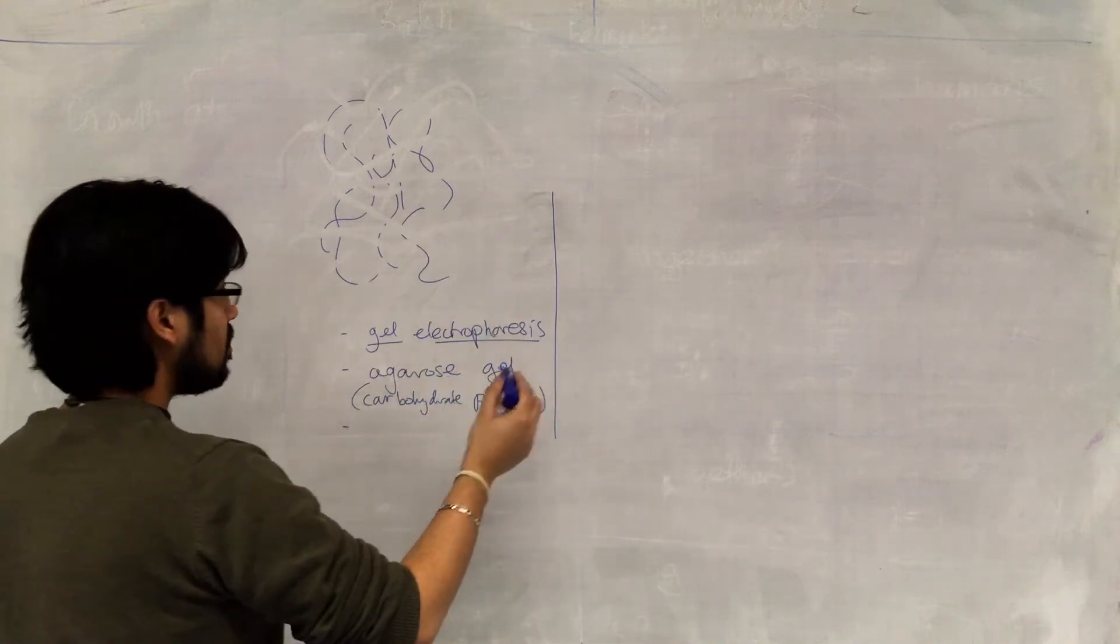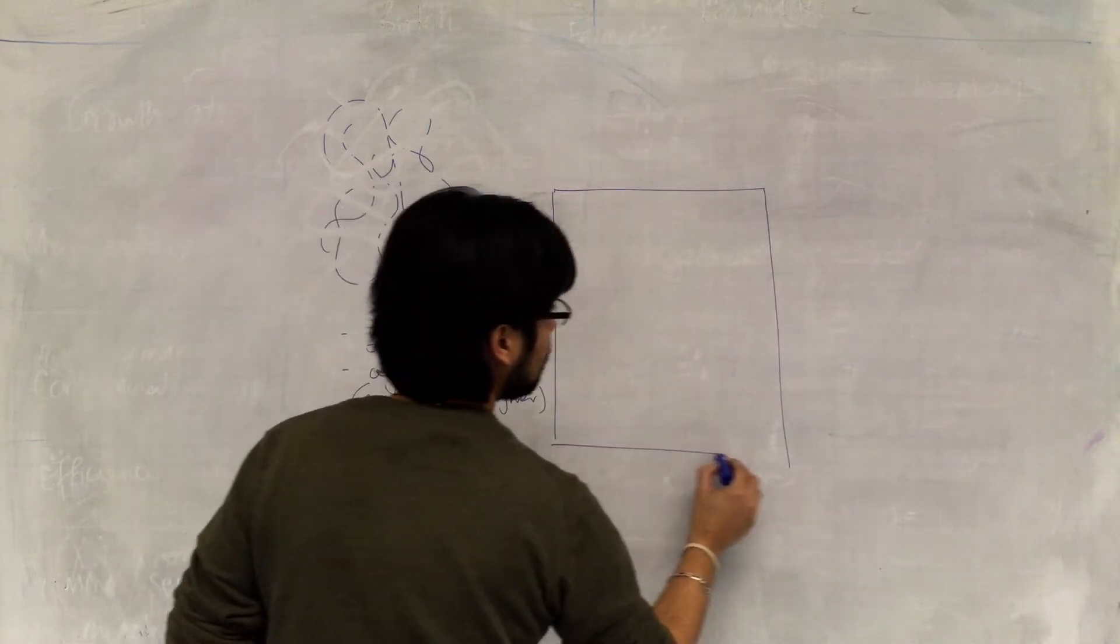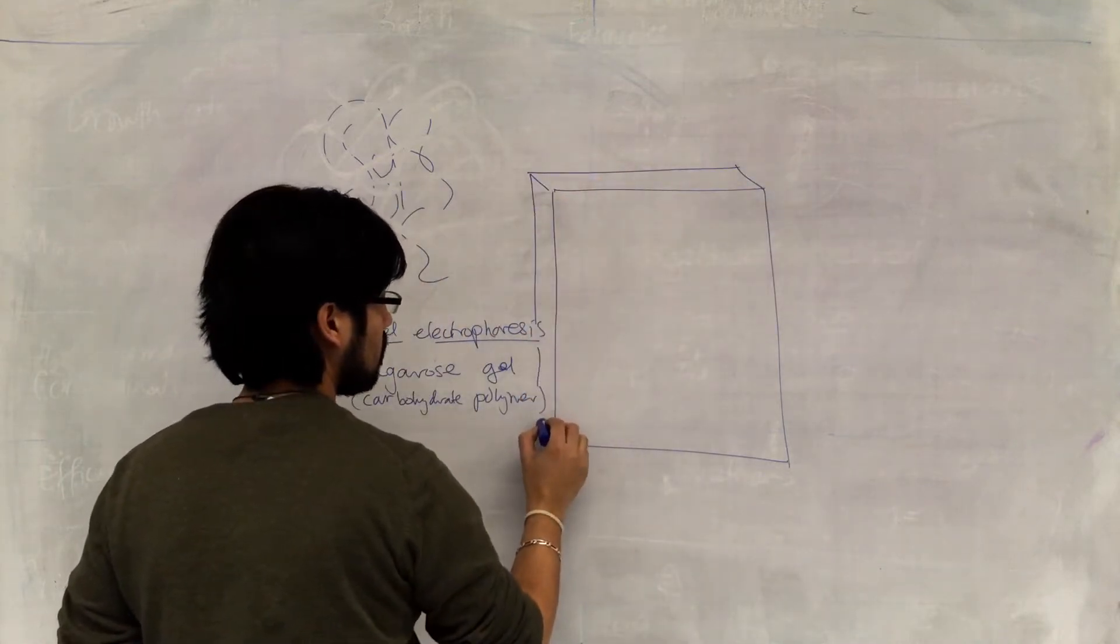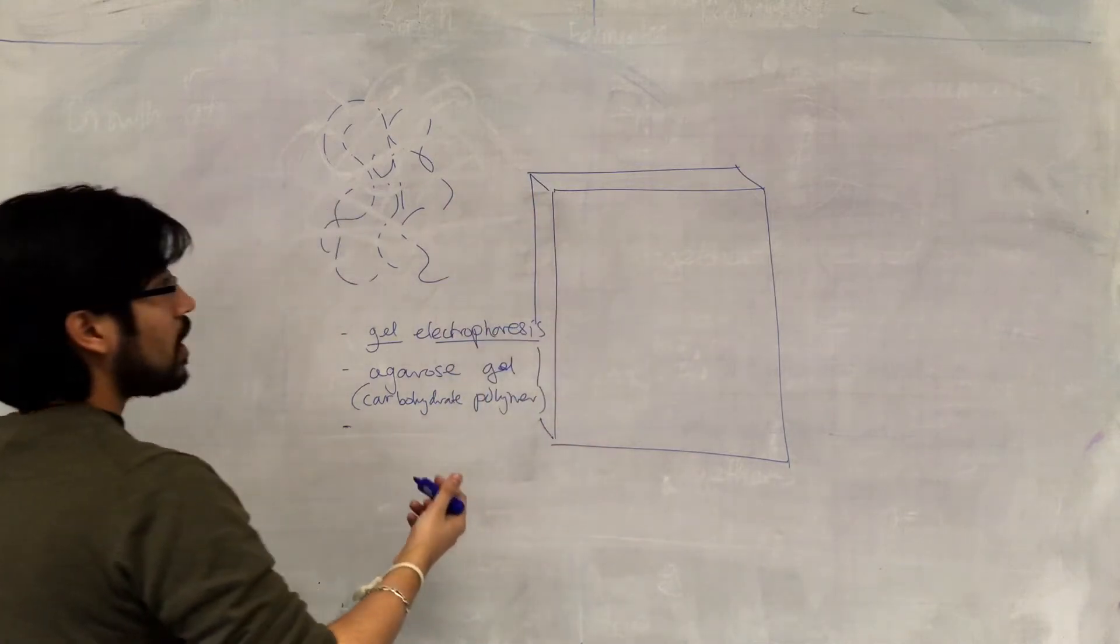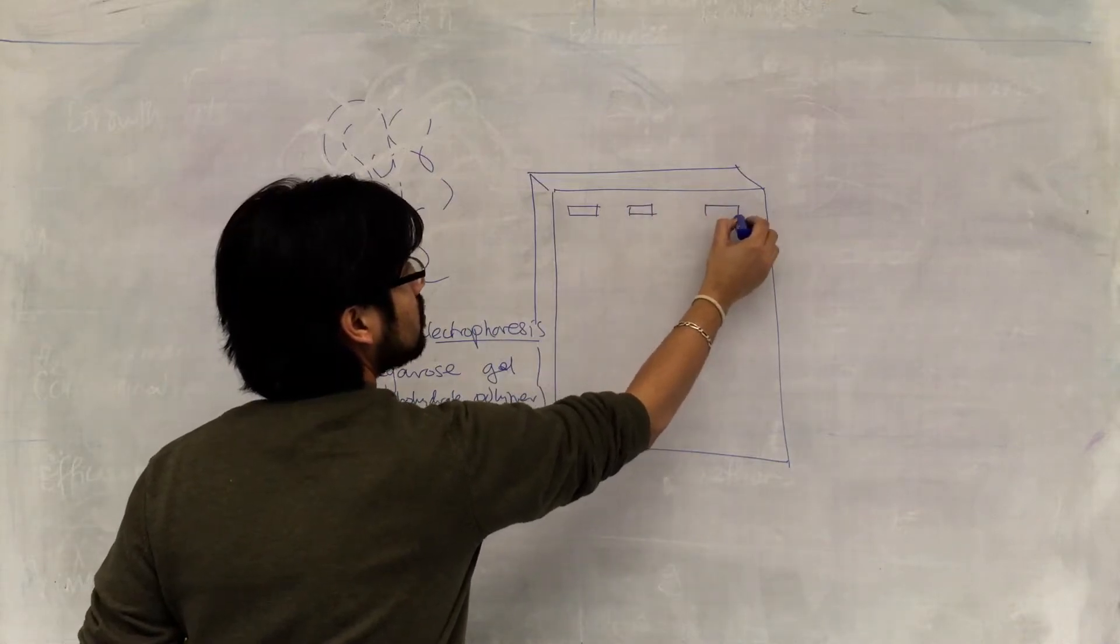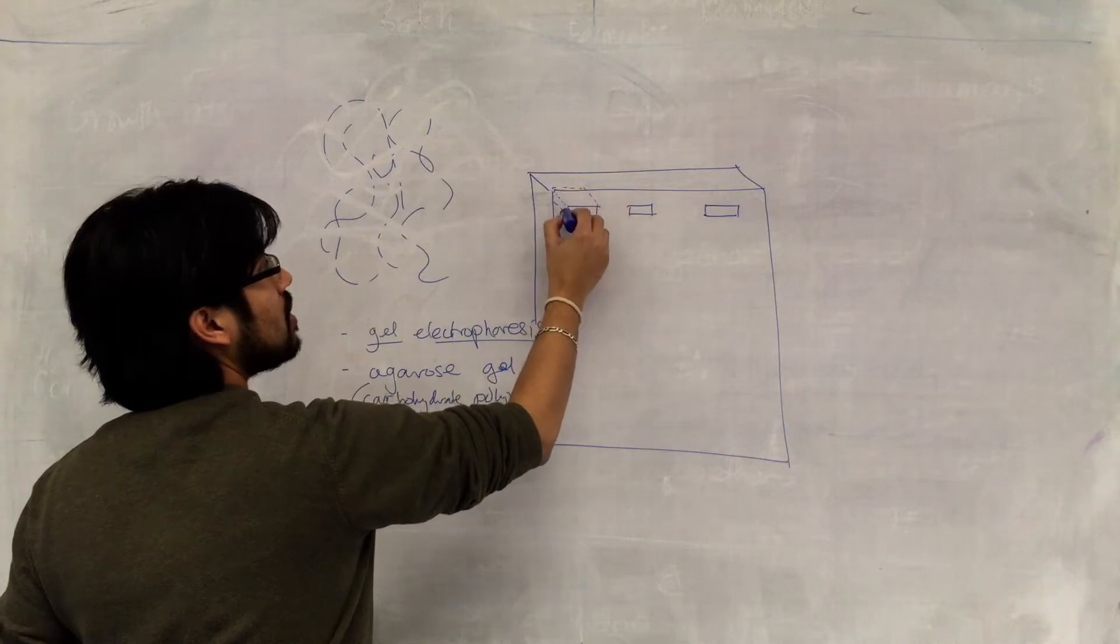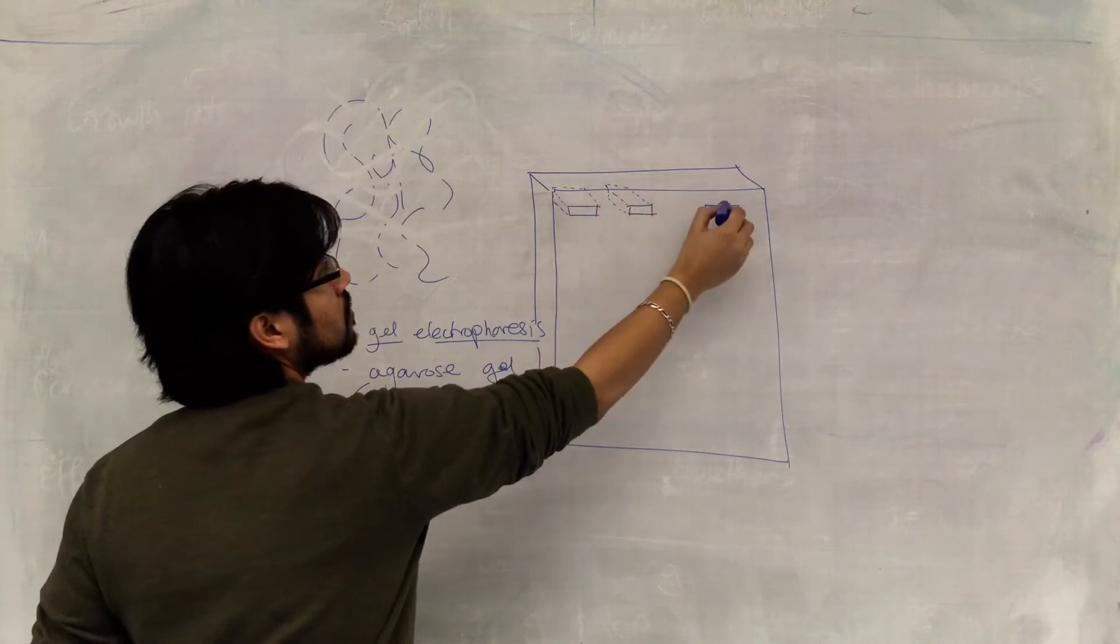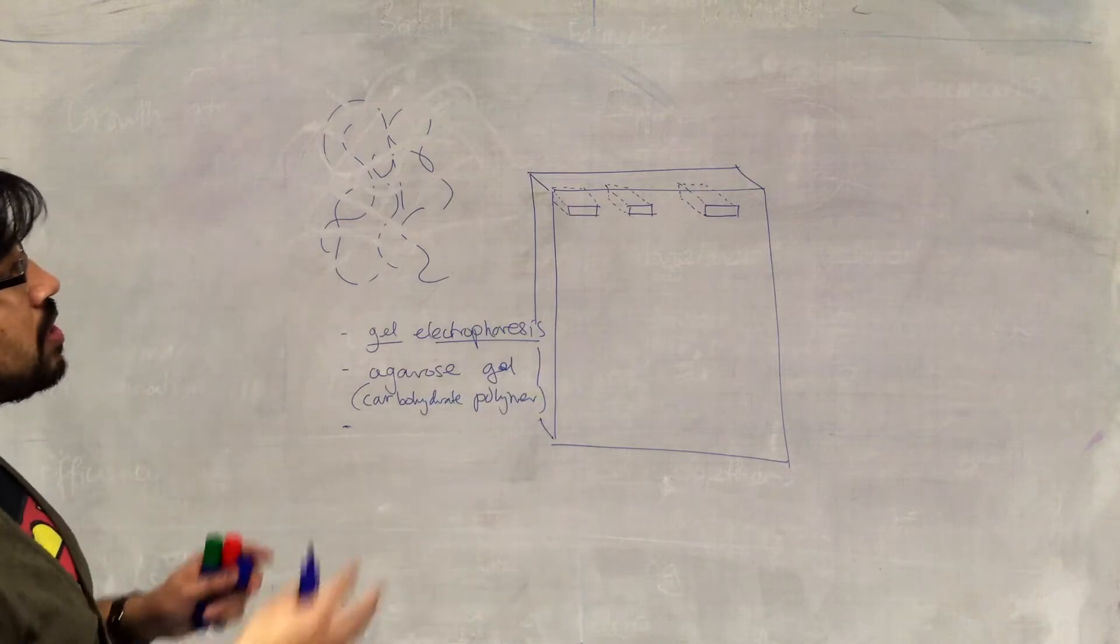Now the principle is that the gel will be something like this, three-dimensional. So it will be a three-dimensional gel polymer. And essentially we'll put our mixture of DNA into wells that have been cut into the gel. So there's our wells.